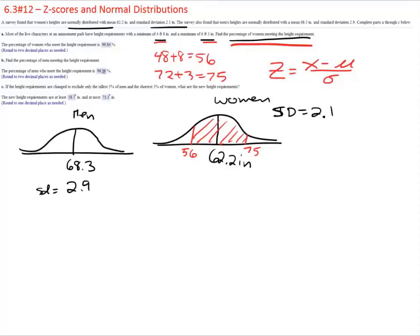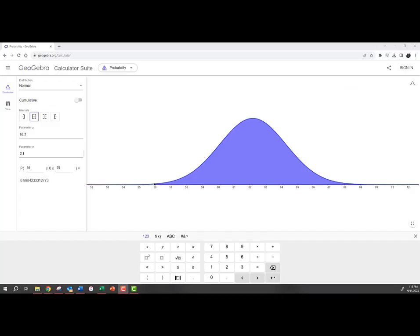The percentage of men who meet the height requirements, we can do the same thing with the men. Now let's try the second example where we're doing pretty much the same thing but with men. We can even just leave these two numbers and all we have to do is change the details of the data for men. They've got a mean of 68.3 and a standard deviation of 2.9 and it automatically does all the computations for us. And there it is for men, 98.955 so we would round to 98.96% as the answer for that one.